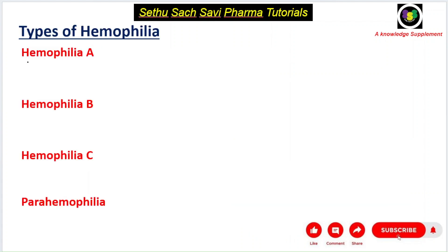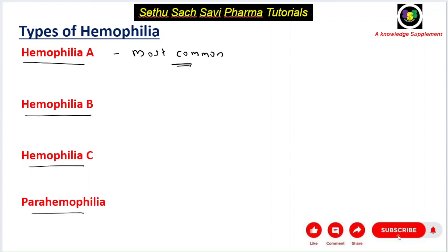Hemophilia can be divided into four main types: Hemophilia A, Hemophilia B, Hemophilia C, and Parahemophilia. The most common is Hemophilia A, followed by Hemophilia B as the second most common. Hemophilia C and Parahemophilia are comparatively rare and seen in fewer people.